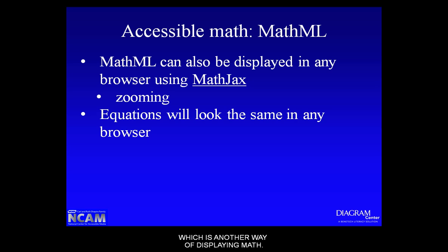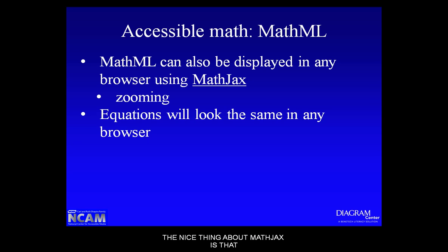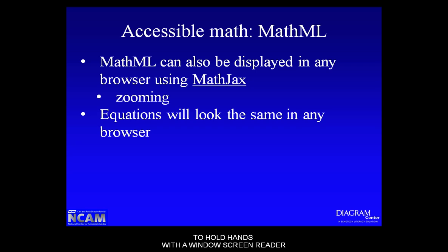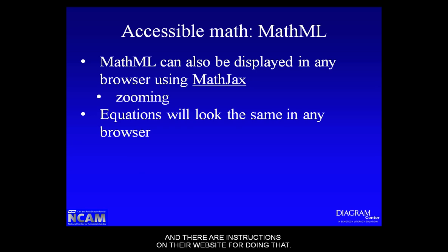Some of you may be familiar with MathJax, which is another way of displaying math. MathJax is a JavaScript library that can be used to render math in any browser — even if a browser doesn't support native MathML, you can use MathJax to display MathML. All equations look the same in every browser with MathJax, with no differences in rendering. MathJax can also hold hands with a Windows screen reader to read math aloud, and provides visual accessibility support such as scaling and zooming. Visit MathJax.org to learn more — a basic implementation is very easy.